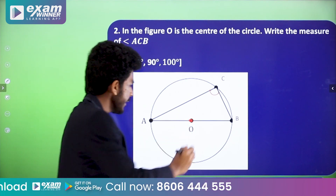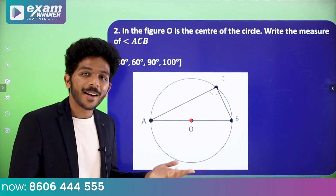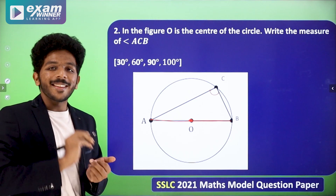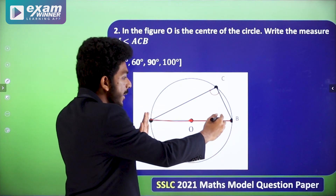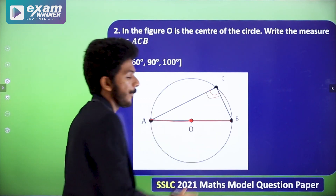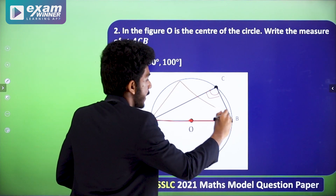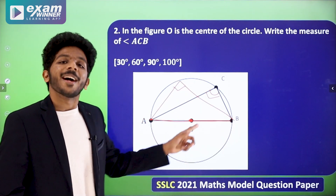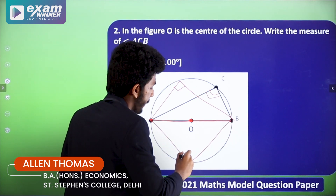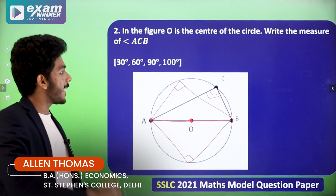If O is the center, then line AB is a diameter. The key theorem here is: if you inscribe an angle in a circle by joining any point on the circle to the endpoints of a diameter, the angle will be 90 degrees. So the answer is 90 degrees.